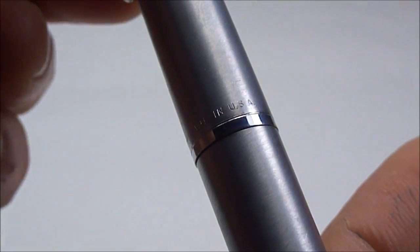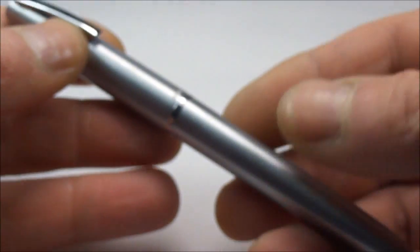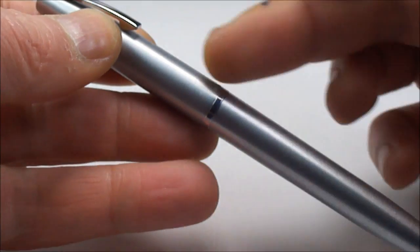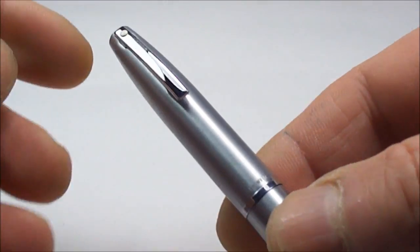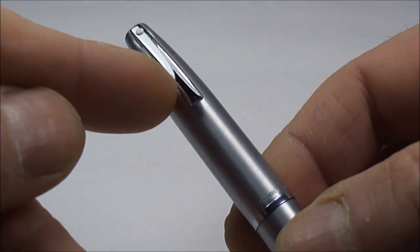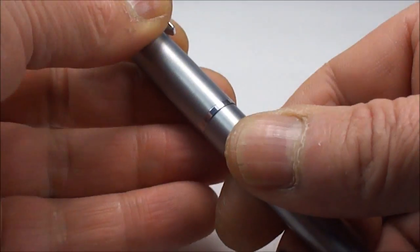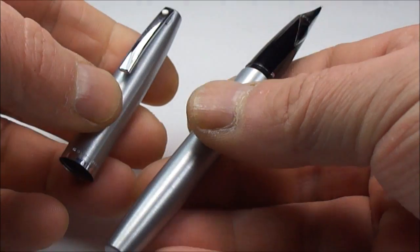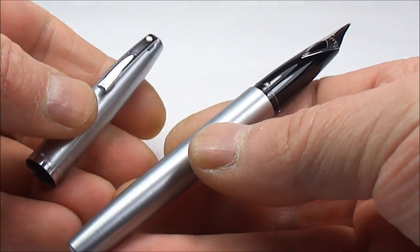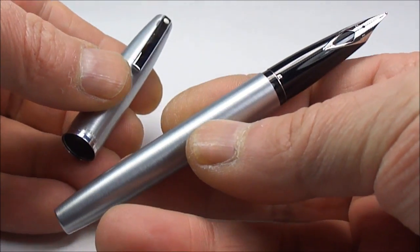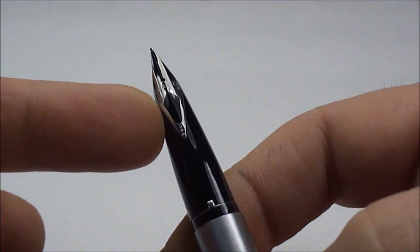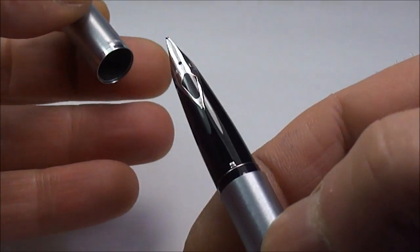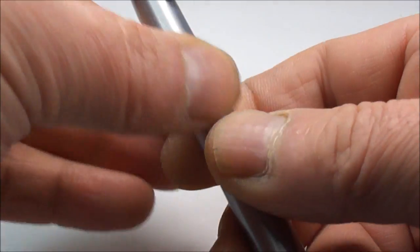This particular model, with it being the CT, comes in this brushed chrome pattern and also comes with chrome trim there. If we take the cap off and show you the pen and the cap together, you can see absolutely lovely. You'll also notice it's got this inlaid stainless steel nib, which we'll cover in a moment.